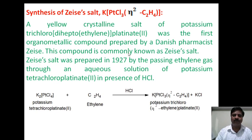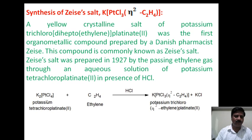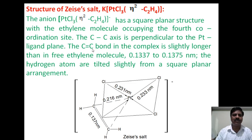Zeise's salt was first prepared in 1927 by passing ethylene gas through an aqueous solution of potassium tetrachloroplatinate(2−) in the presence of HCl. The simple reaction is: potassium tetrachloroplatinate(2−) plus ethylene gas, in presence of HCl, gives a yellow crystalline precipitate — Zeise's salt.